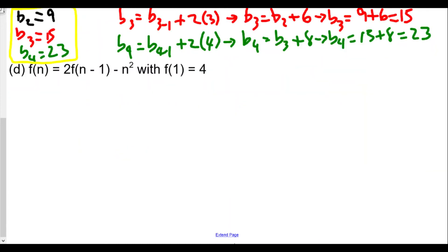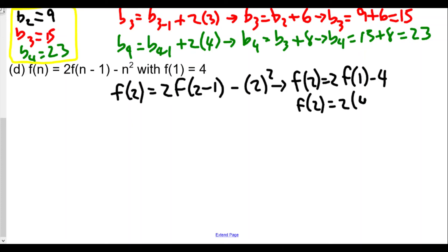And finally, we have d. d is f(n) is equal to 2 times f(n-1) minus n squared. And so for this one here, we know f1 is 4. So f2 equals 2 times f(2-1) minus 2 squared. And that would be equal to—we'll say f2 is equal to 2 times f1 minus 4. But f1 we know is 4. So f2 equals 2 times 4 minus 4. And 8 minus 4 is just 4. So we'll say in this case, our second term f2 is equal to 4.